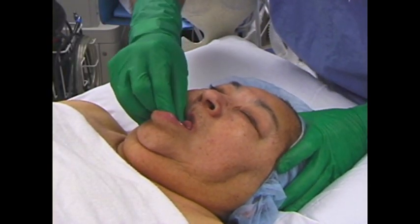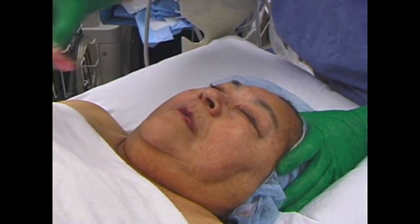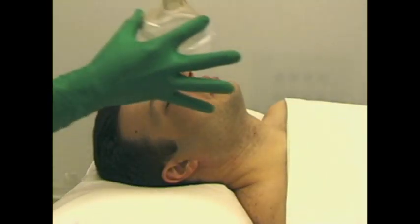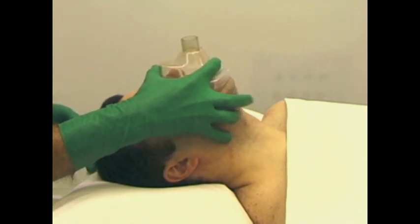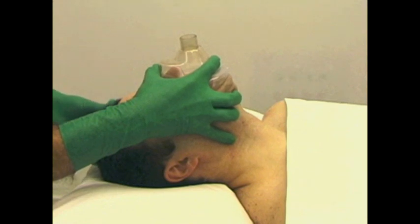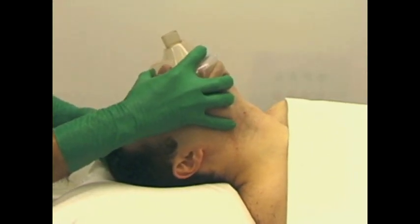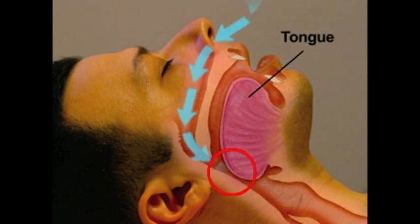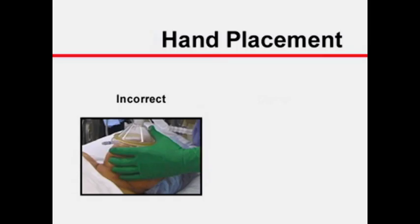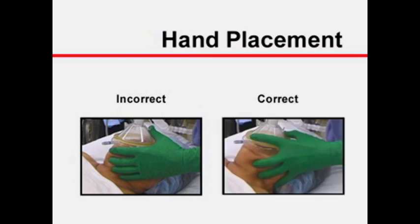One may consider leaving full dentures in place to provide a better mask seal. The most common method to hold the mask consists of placing the thumb and index finger on the body of the mask while the other fingers pull the jaw forward and extend the head. The middle and ring finger are placed on the ridge of the mandible, and the fifth finger is placed behind the angle of the mandible. The tongue is the most common cause of airway obstruction. It is important to minimize the pressure applied to the submandibular soft tissues, as this may further obstruct the airway by pushing the tongue against the palate.